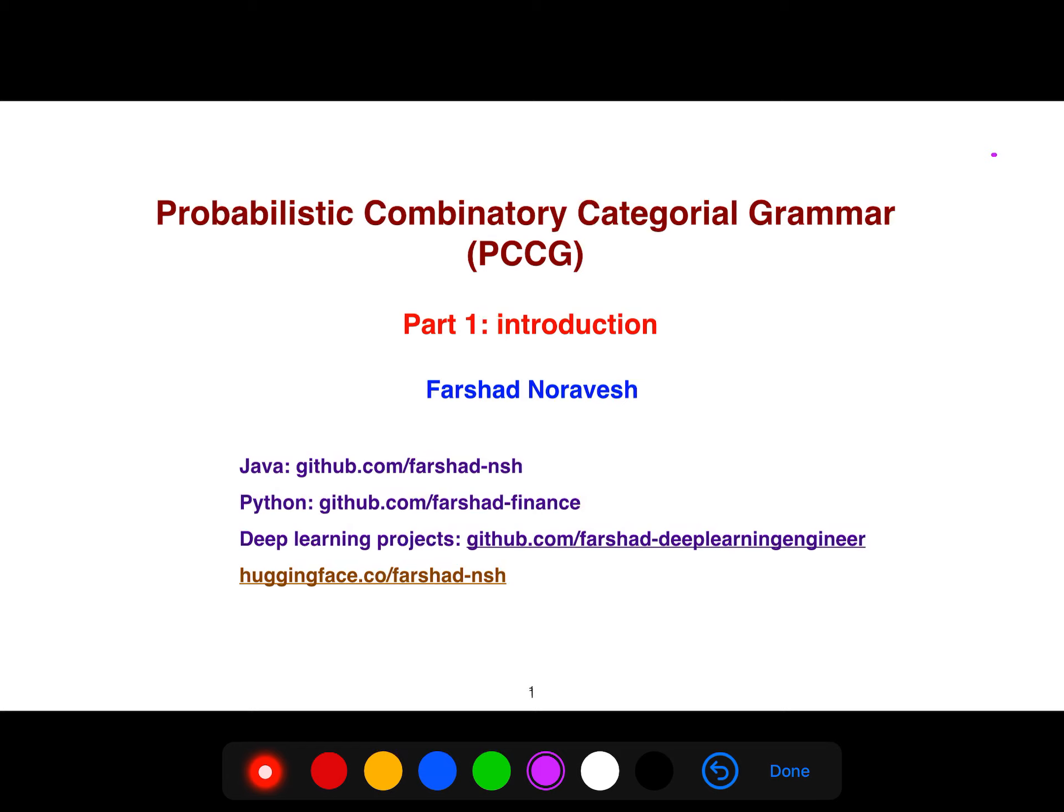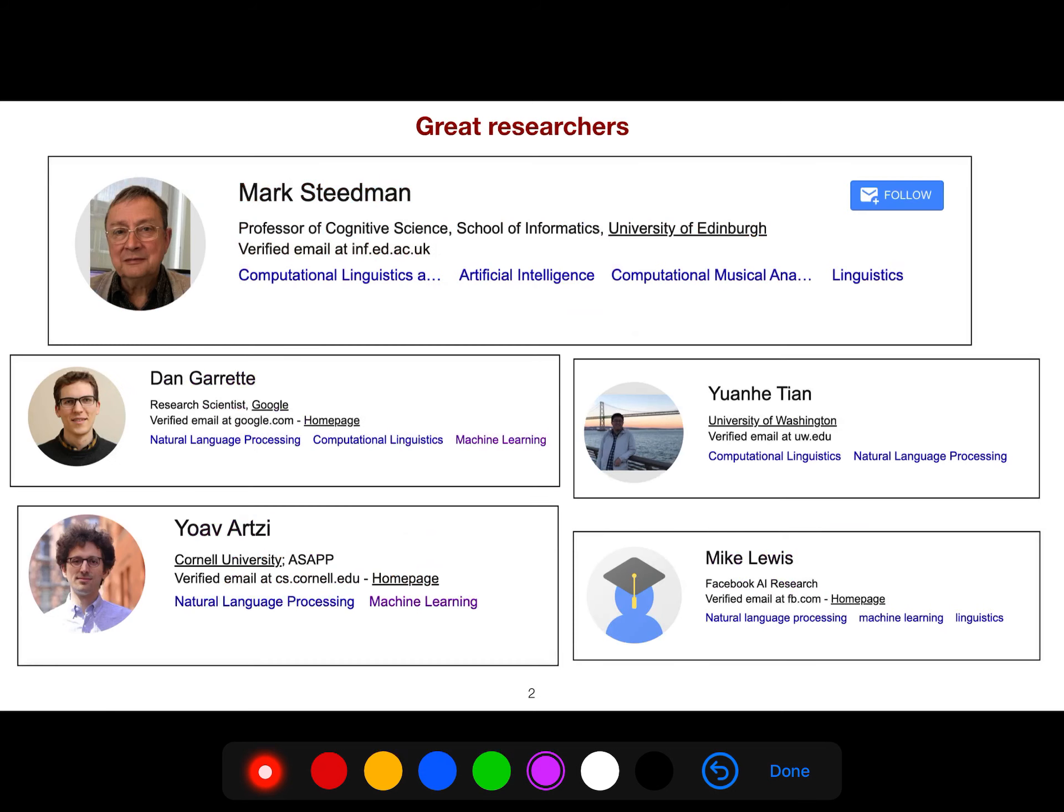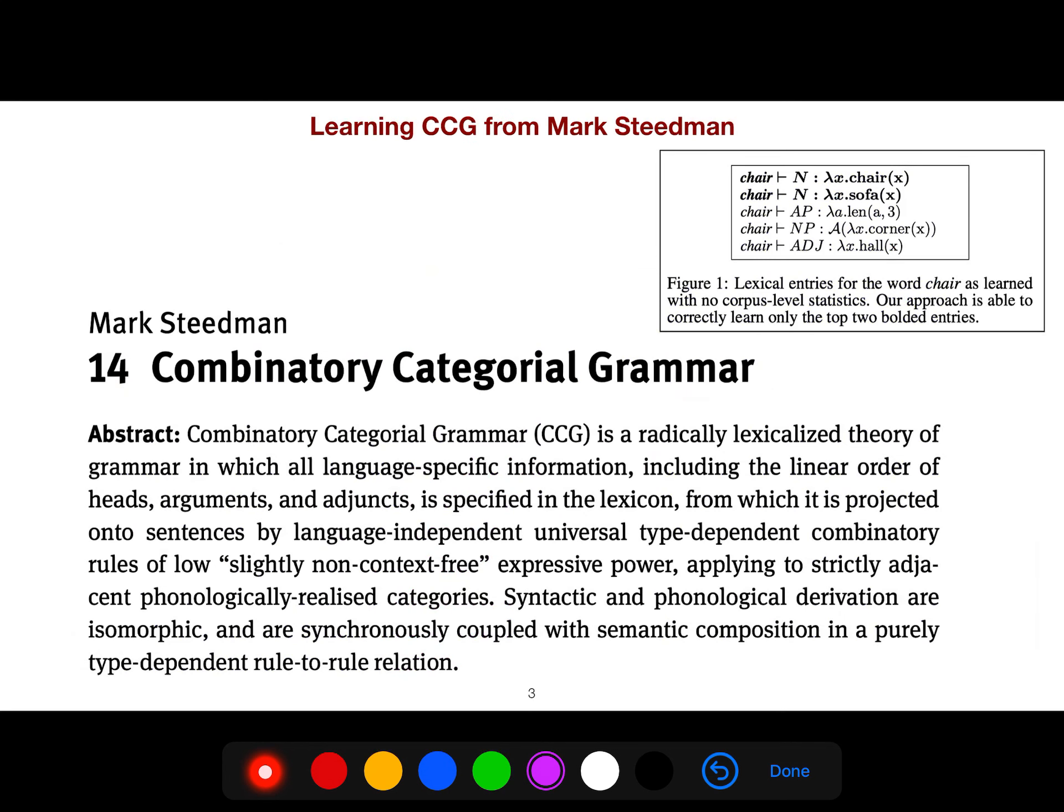I think it was first developed in Edinburgh in Scotland by people like Mark Steedman. It is an old grammar formalism, but it was Mark Steedman and his colleagues that used this formalism and combined it with lambda calculus and used log-linear models to learn the lexicon, in order to use it for semantic parsing and more machine learning-based problems. These are amazing scholars.